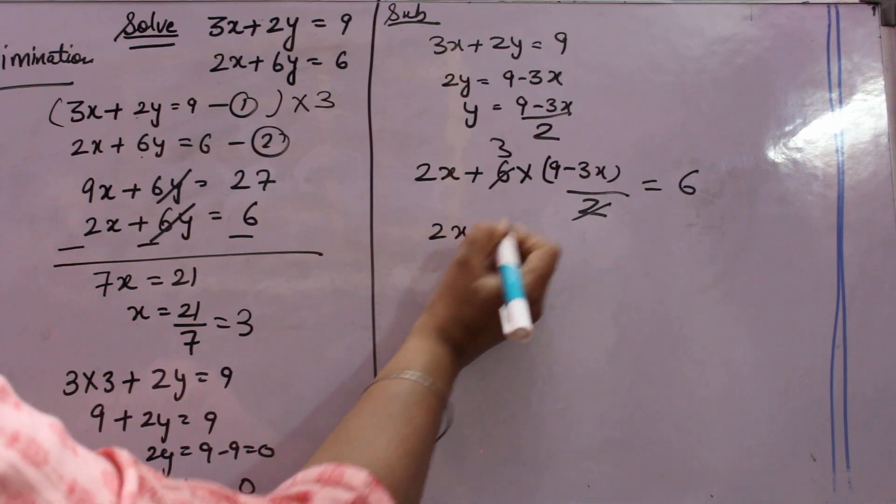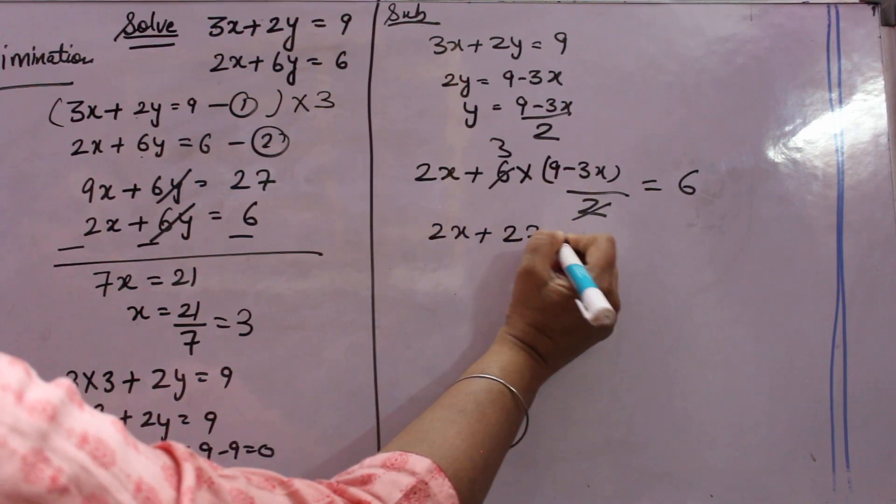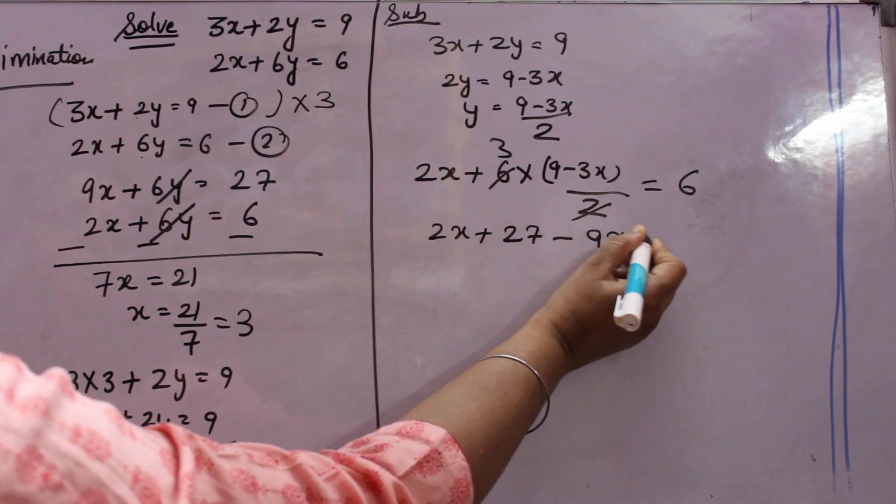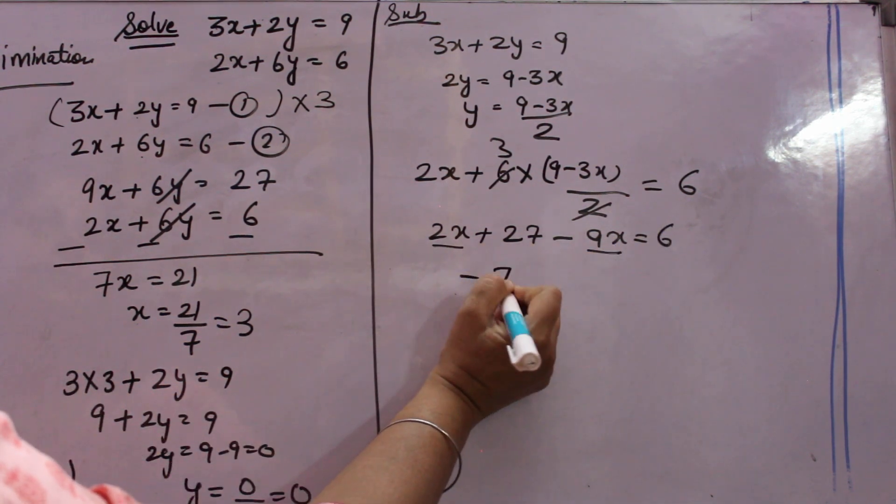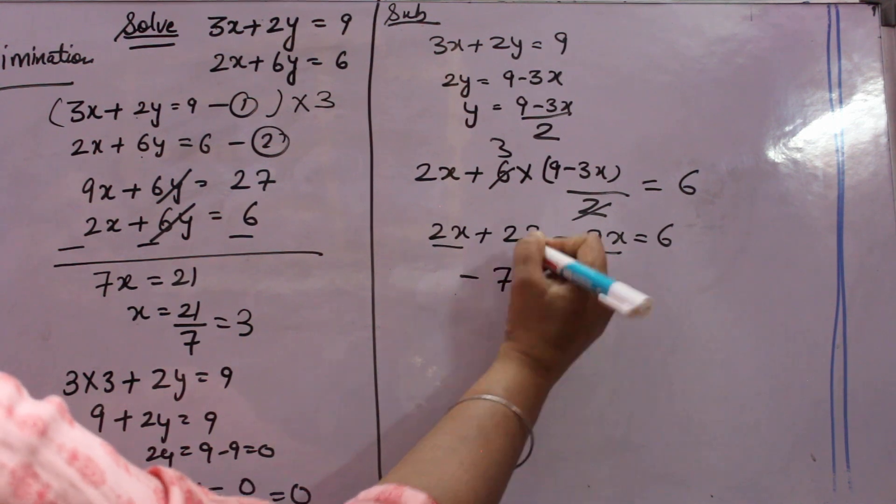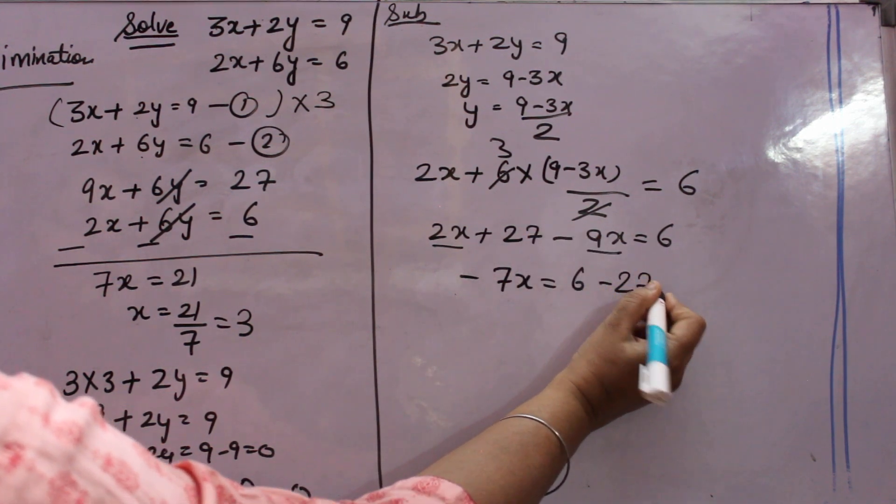You will get 2x plus 9, 3 into 9 is 27 minus 3 into 3, 9x is equal to 6. Now 2x minus 9x is minus 7x.